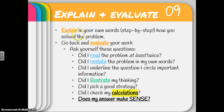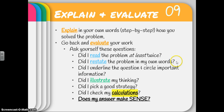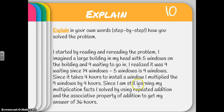So when I explain it, I want to put it in my own words — that step-by-step of how I solved the problem. Once I've explained my thinking, I want to go back and evaluate my work. Check that I did all those steps in RICE: Did I read that problem at least twice? Did I restate the problem in my own words? Did I underline the question and circle important information? Did I illustrate my thinking? Did I pick a good strategy?